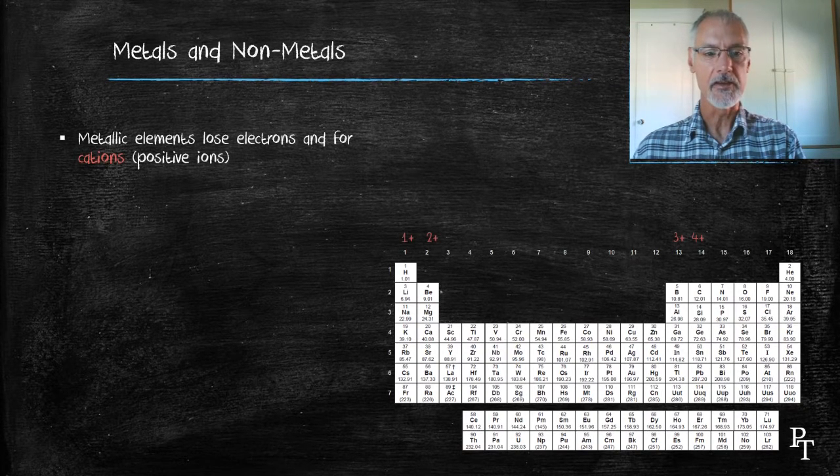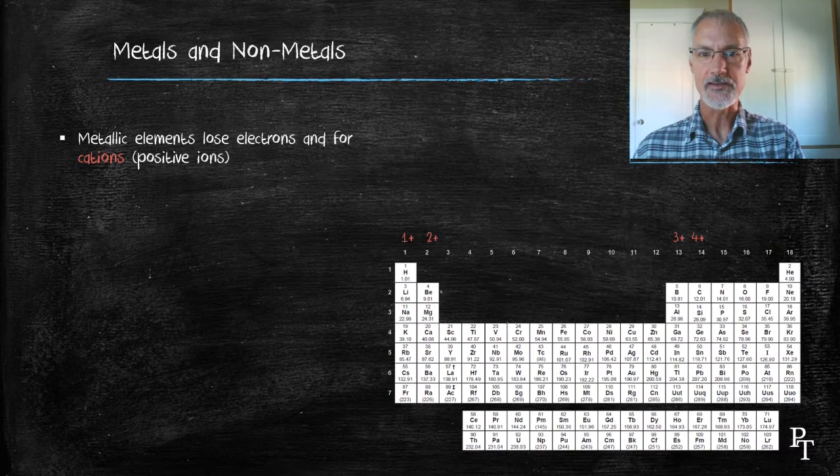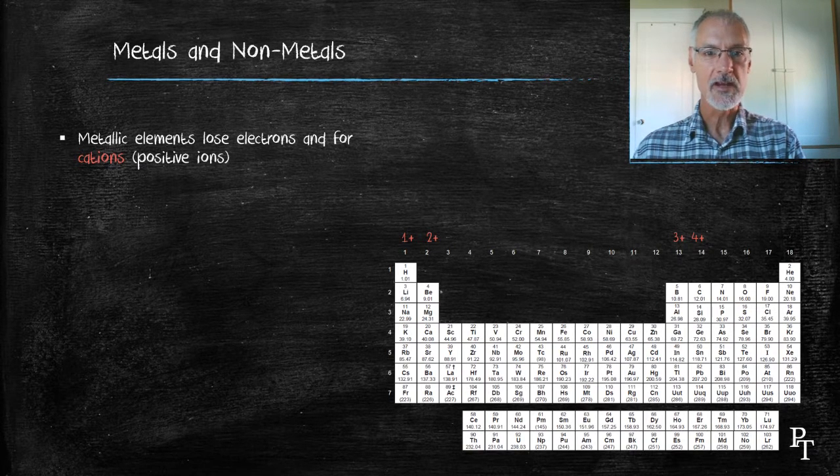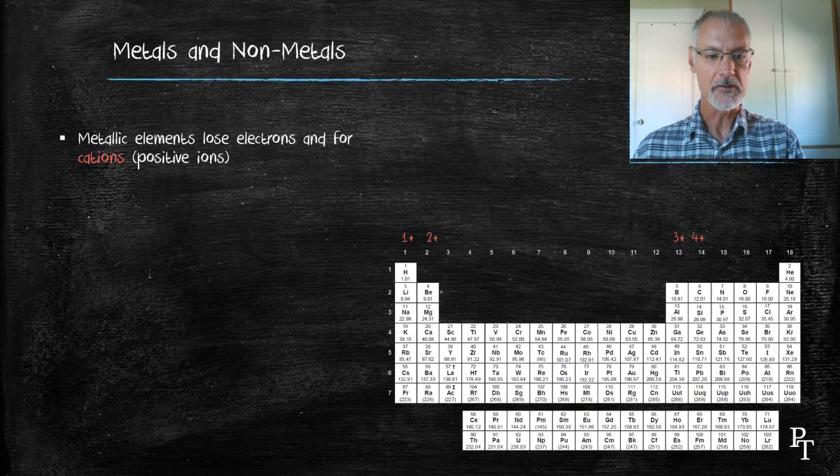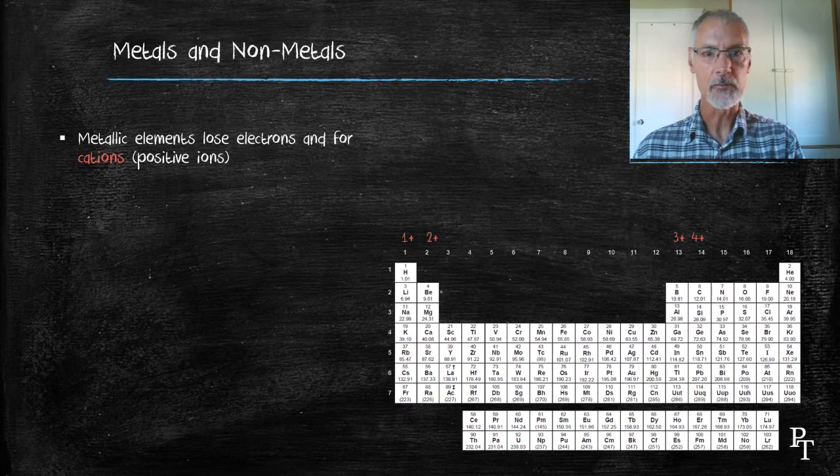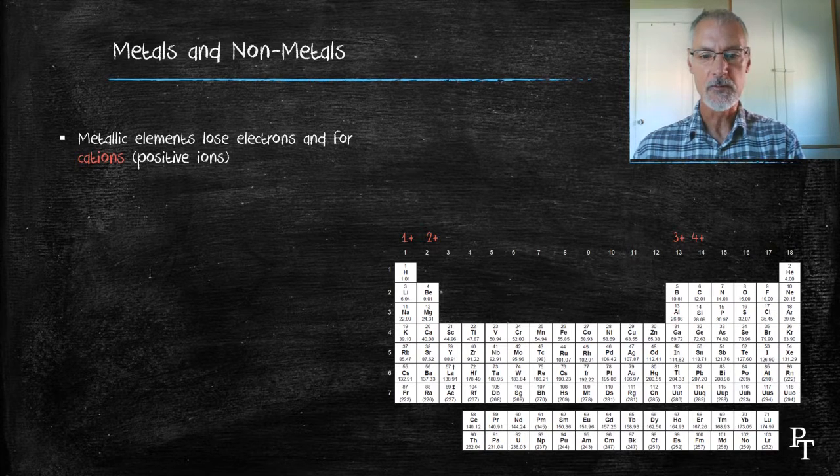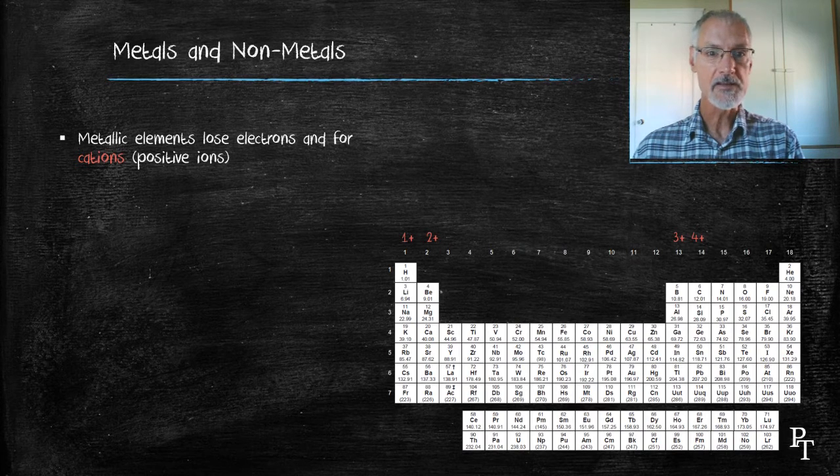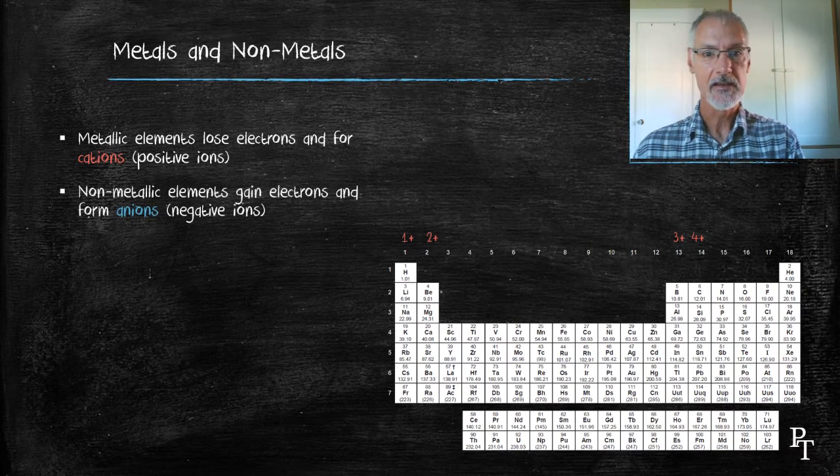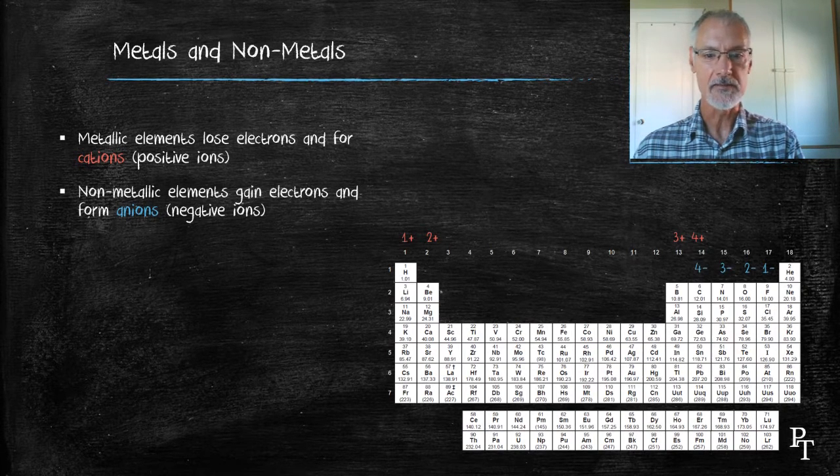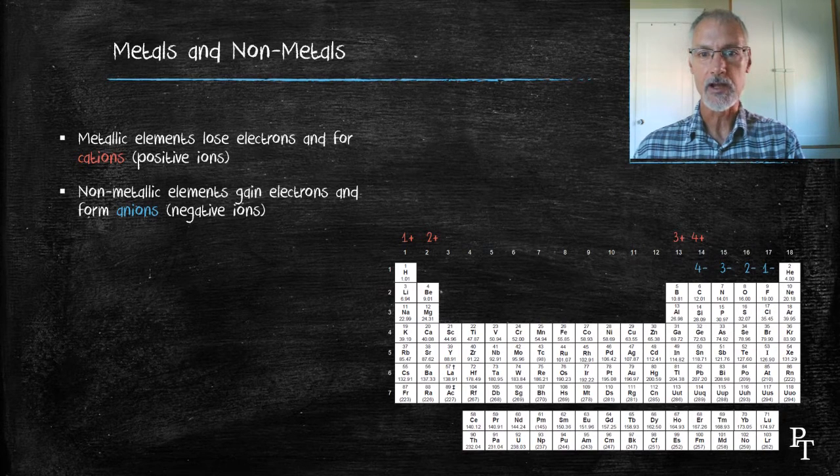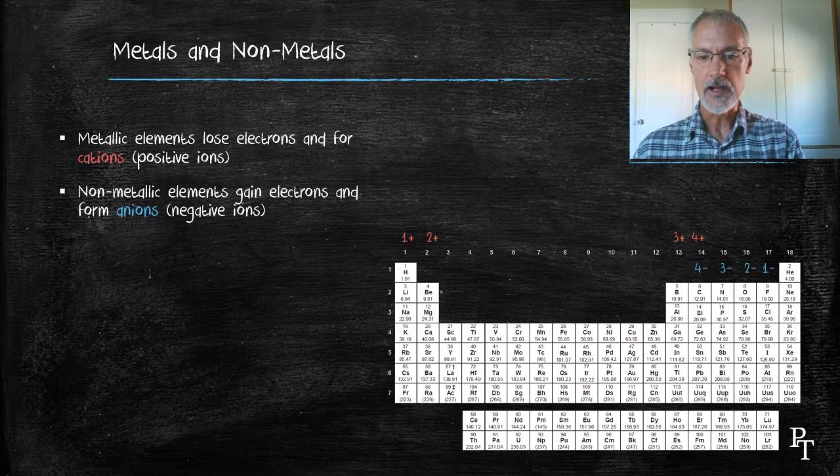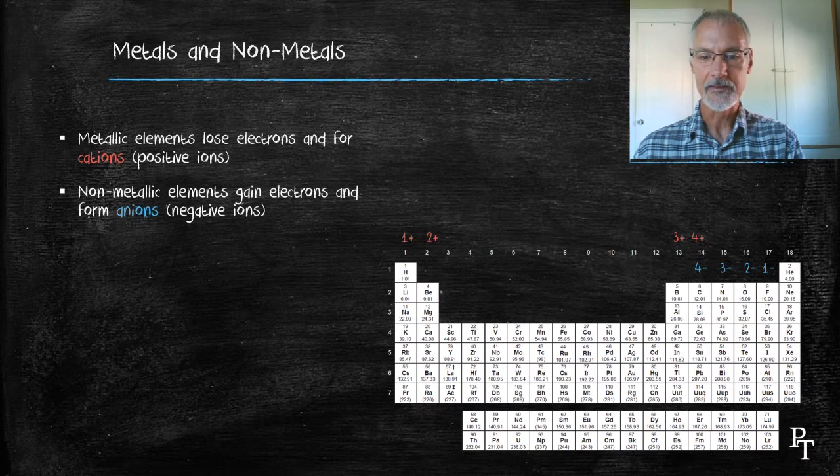Metals tend to lose electrons and as a result develop positive charges. Here in the periodic table we can see the most common charges developed by some of the representative elements, starting with lithium and beryllium at plus one and plus two, then moving to aluminum and silicon at three plus and four plus. Non-metals on the other hand tend to gain electrons and develop negative charges. Here we can see the most common charges for some of the non-metals: negative three for nitrogen, two minus for oxygen, one minus for fluorine.